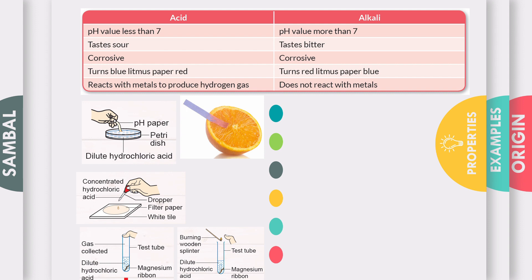Alkali does not react with metals. If you put a magnesium ribbon inside a sodium hydroxide solution and then test with a lighted splinter, there will be no pop sound. Meaning, there is no hydrogen gas being produced.